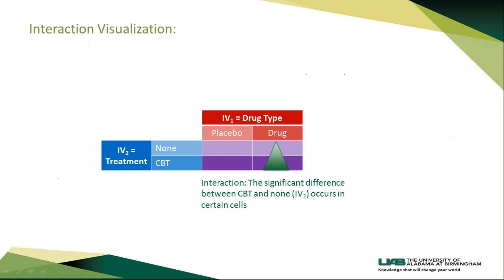We can try to visualize that. Going back to those cells in the 2x2 — remember we have four cells — the interaction essentially says that on the treatment type independent variable or factor, CBT and the no treatment group did differ from each other, but maybe that difference only occurred at one specific spot. This is different from a main effect, because now we're saying that it does matter which cell you're in, which level of the other independent variable. This is what we mean by interact.